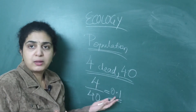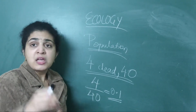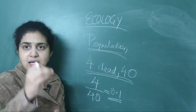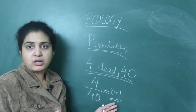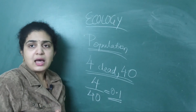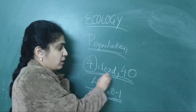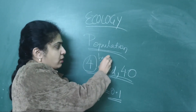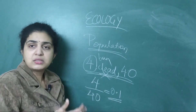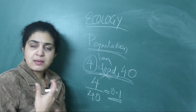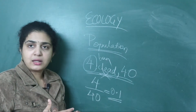The death rate is 0.1 per year — you are calculating the average death rate for the population, not for a specific individual. Similarly, for birth rate: if 4 were born in the same population of 40, it is again 4 by 40, which gives 0.1 birth rate per year. Birth rate and death rate are calculated this way. I gave numerous examples in the last class, so just go through that.